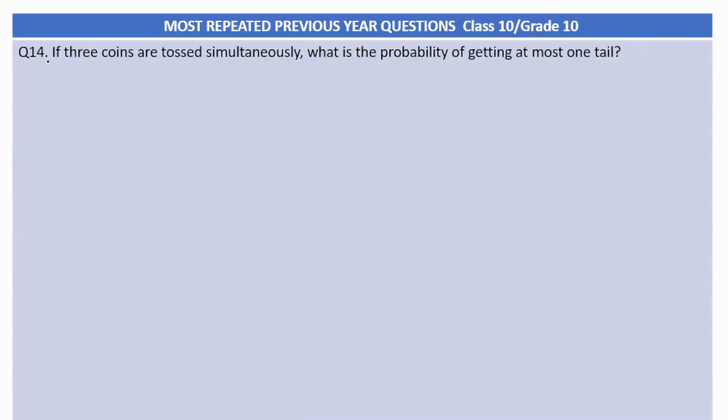Let us start this question from probability. If 3 coins are tossed simultaneously, what is the probability of getting at most 1 tail? Now what are the most important terms here? At most 1 tail means I can get no tail also, that is also a favorable outcome. If 2 tails are coming, this I will not count into my favorable outcomes. At most 1 tail means no tail or 1 tail.